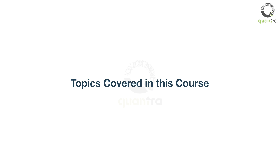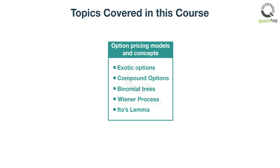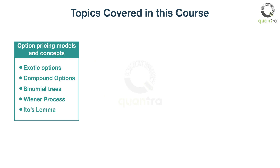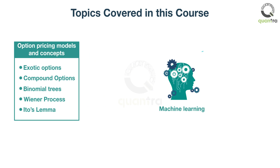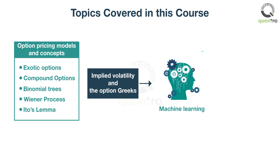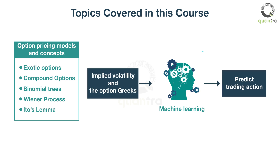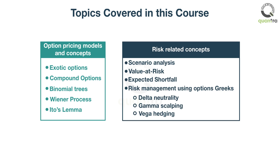This course will introduce you to the advanced concepts about options trading and implement them as strategies in the live market. You will be introduced to different option pricing models and concepts. In options pricing, some patterns are difficult to detect. In this advanced course, you will use machine learning to identify these patterns. The decision tree classifier will take inputs like the implied volatility and the option Greeks, and then predict the trading action to be taken. You will also learn various risk-related concepts and implement them in your strategies.